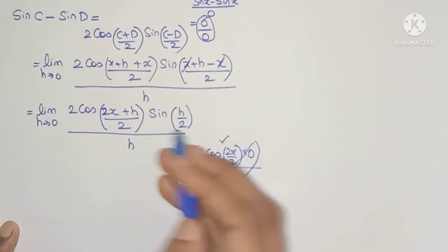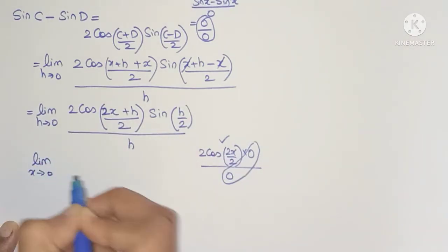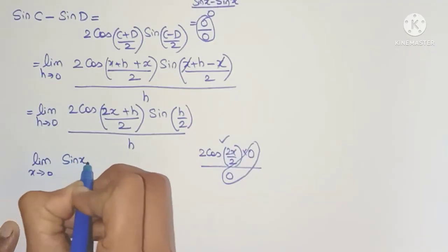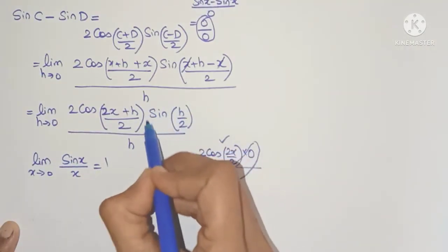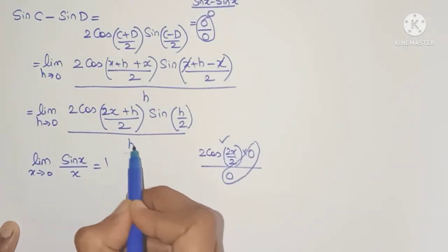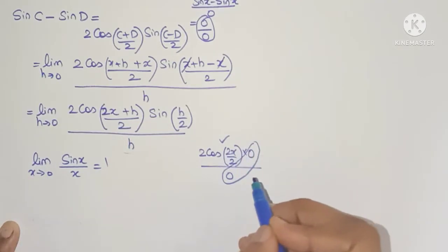Now if you observe this expression, it looks like the limit formula: limit x tends to 0, sin x divided by x equals 1. Here in the numerator you have sin h by 2, and in the denominator you have h. So if I somehow bring h by 2 in the denominator also, I can use this limit formula and get rid of the 0 by 0 form.